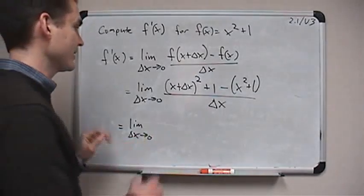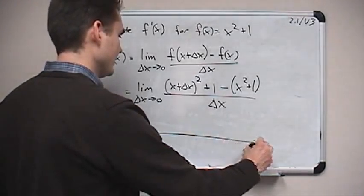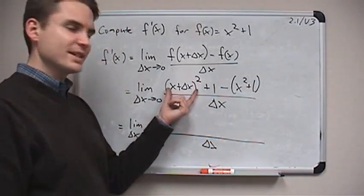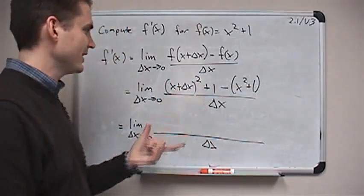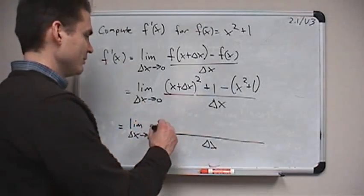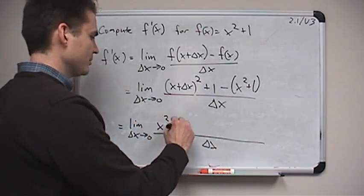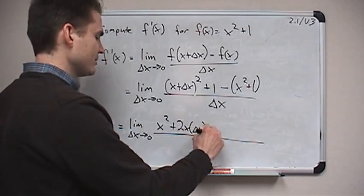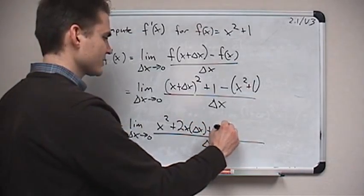So again, x plus delta x times x plus delta x. We have to FOIL that. When we do, we get x squared plus 2x delta x plus delta x squared. You can't just square each term. You have to write two terms times two terms and FOIL.